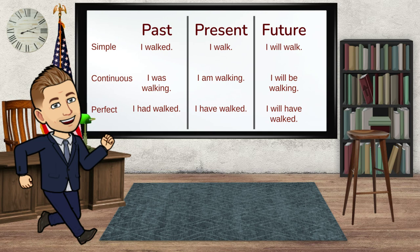When we get to the continuous — the past continuous, the present continuous, and the future continuous — we're seeing either 'was' or 'were' for the past, and 'am,' 'is,' and 'are' being used for the present. And what we will be seeing in this video today is 'will be' for the future tense. And you always have the ING at the end of that action word.